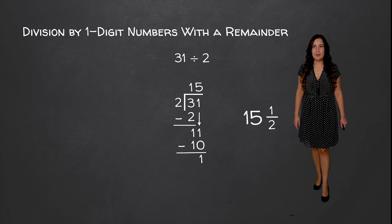Our dividend goes on the inside, so 243, and our divisor goes on the outside, which is 5. First we're going to see how many times 5 goes into our first digit. 5 does not go into 2, so we're going to see how many times 5 goes into 24. We know that 5 goes into 24 4 times because 5 times 4 is equal to 20. So we're going to write the 20 underneath the 24 and subtract. 24 minus 20 is equal to 4.